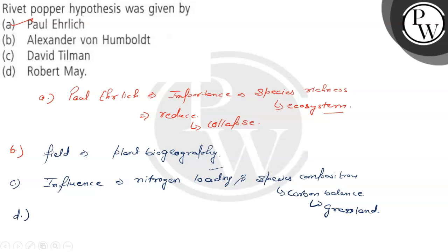Then we have option D, Robert May. Robert May is an ecologist who established the field of theoretical ecology.